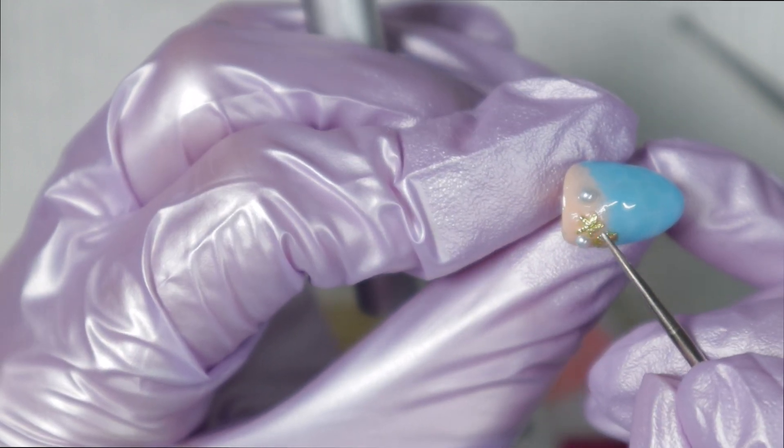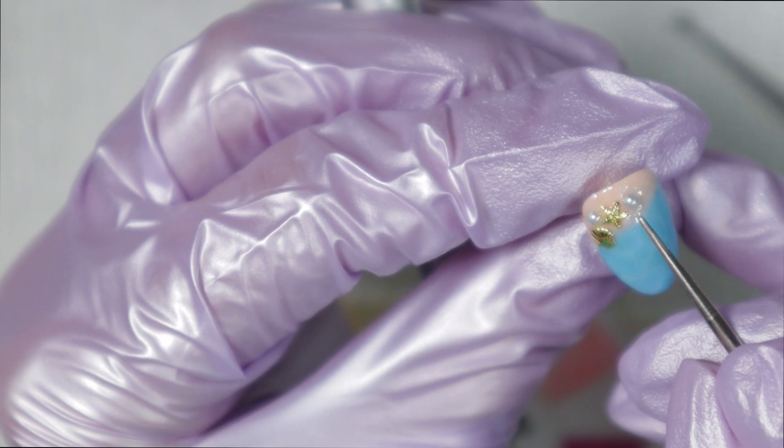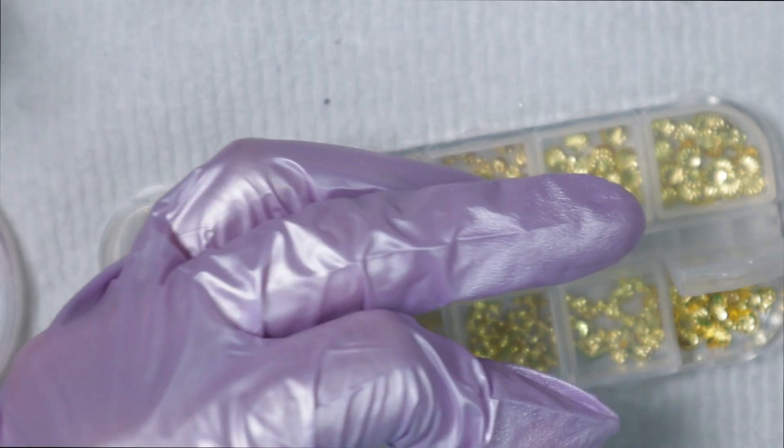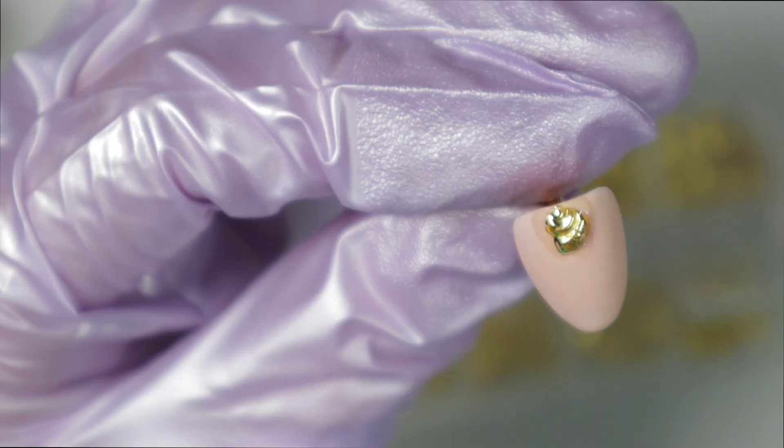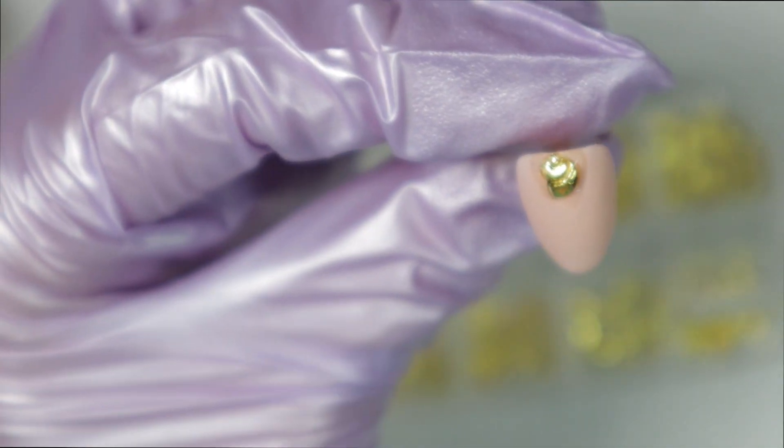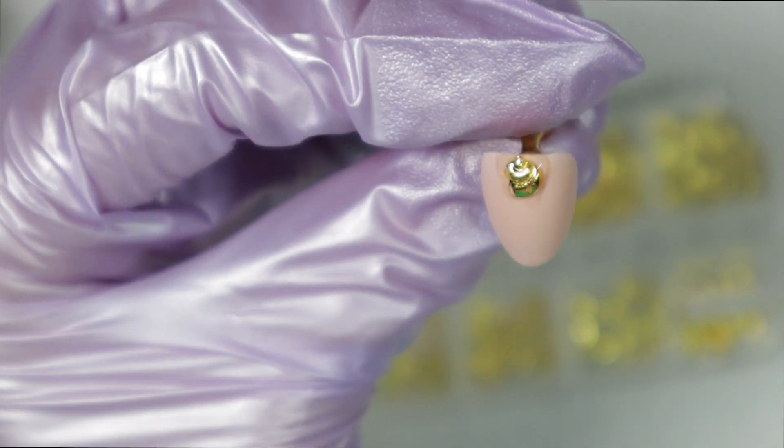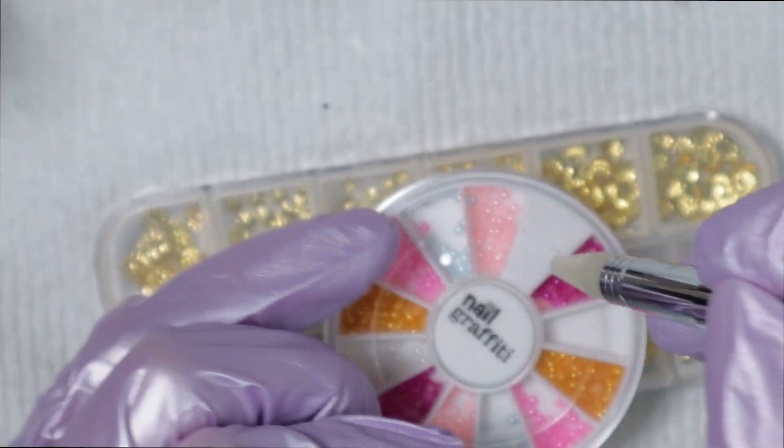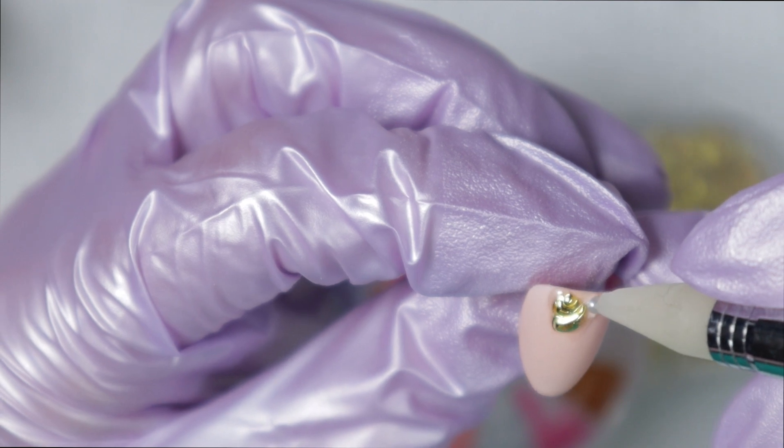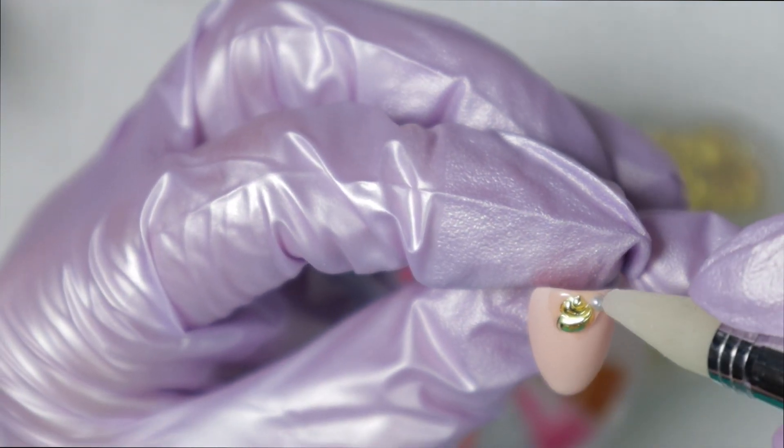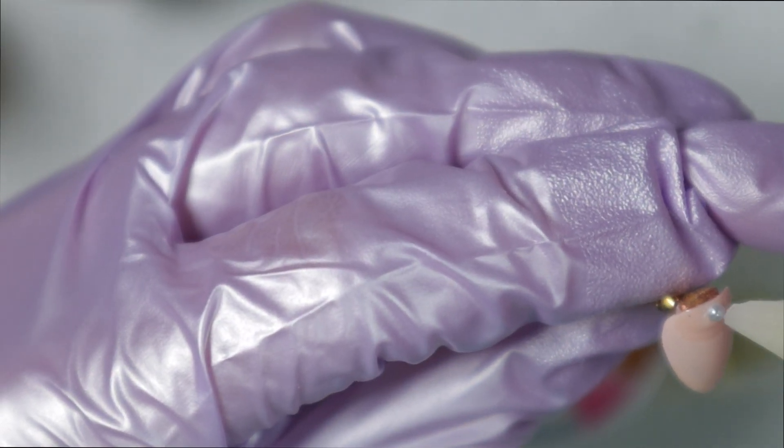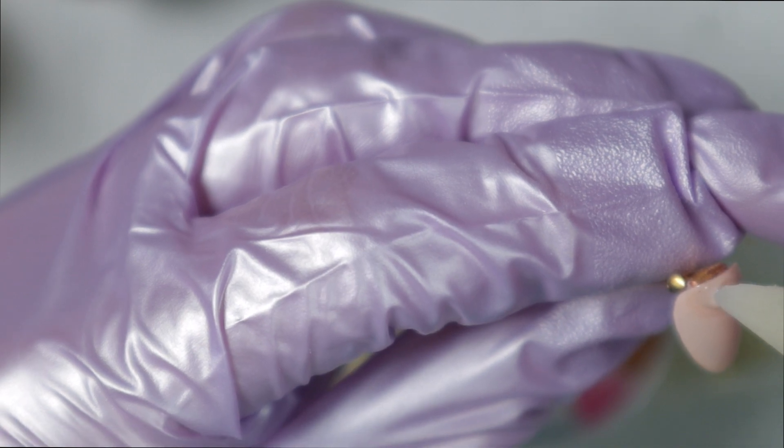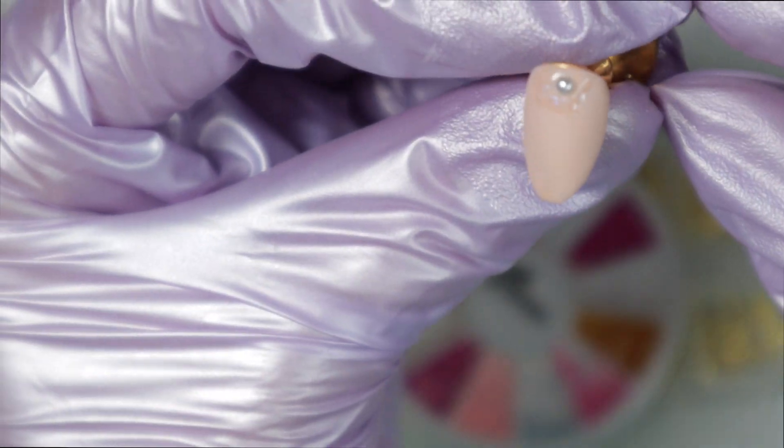I just use the builder gel to apply the seashells, and it seriously secures them so well and so strongly. I recommend working with a more solid builder gel, not something that's super duper runny. You want something on the thicker consistency side, and it'll be a great kind of builder gel to secure your gems and pearls, and what else do they call them? I keep calling them gems. I really don't know what to call these, like seashell trinkets. I'm like thinking about the little mermaid where she wants all the things.